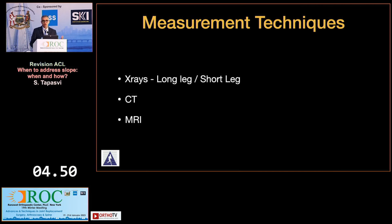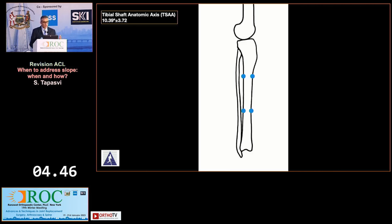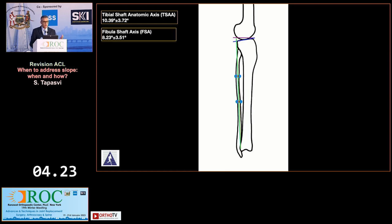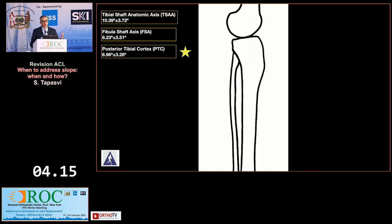There are three ways to measure tibial slope: x-rays, CT, and MR scans. On a long leg film, the tibial shaft anatomic axis method uses two points in the tibial diaphysis joined at their center, with a perpendicular line and a line along the slope — normal values are around 10 degrees. On short films, the posterior tibial cortex method draws a line along the posterior cortex, a perpendicular, and a line along the slope, with normal values of 7 degrees. It's important to know normal values so you can identify what is abnormal.